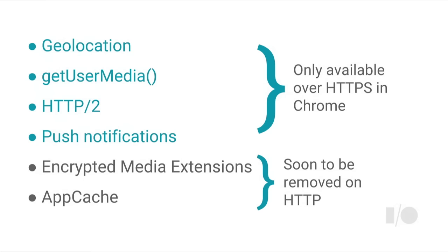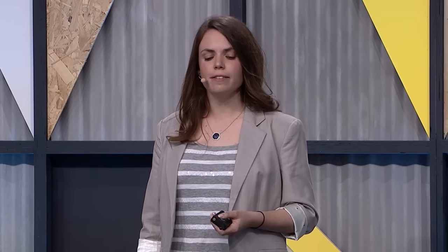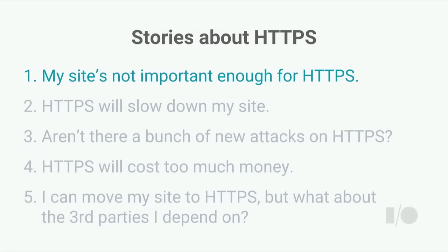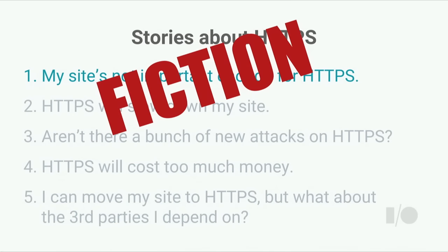Alice realizes that in order to build a progressive web app with the user experience she wants, and in order to do it safely and guarantee that the user experience she builds is the one her users receive, she needs to use HTTPS. And that's why we think HTTPS is important for every site on the web today, even if on the face of it, it doesn't look privacy or security sensitive.